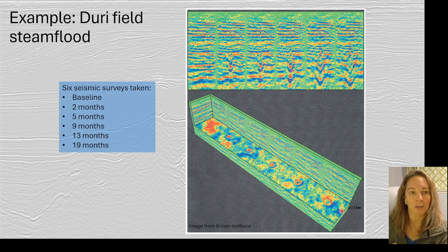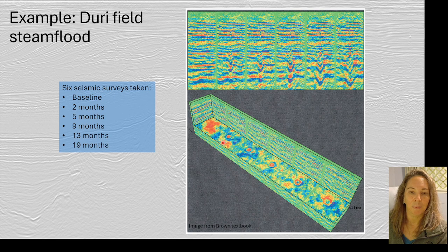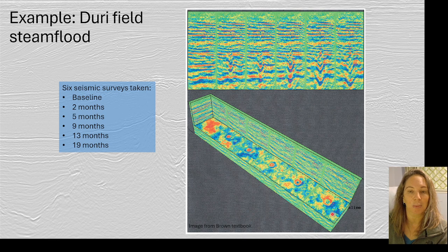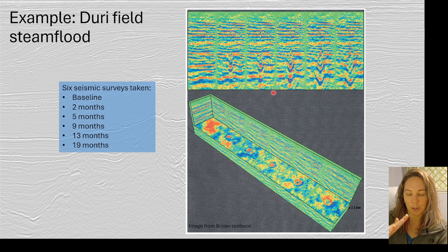Here's a good example from the Brown textbook of the Dury Field steam flood. We have vertical seismic and also a map view, where at time zero — before any steam was injected — and then at two, five, nine, 13, and 19 months going out. You can really see the difference in the map view, where a little circle grows and enlarges through time as more and more steam is injected. You can see that also in the vertical section, along with the velocity pull-down effect in this heavy oil field.